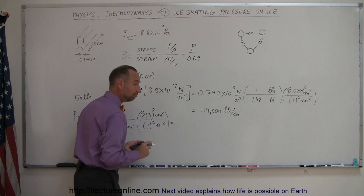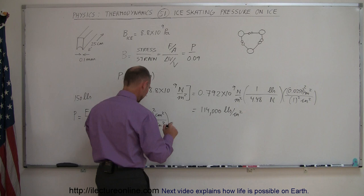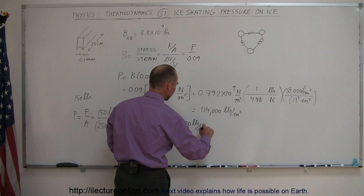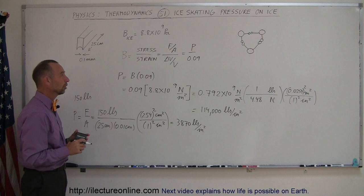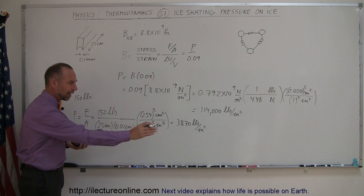This is far short from the pressure required to melt the ice due to pressure. So what we're finding here is that ice skating occurs when the skate slides over the ice and ice appears to be melting, but it's not because of the pressure produced by the ice.